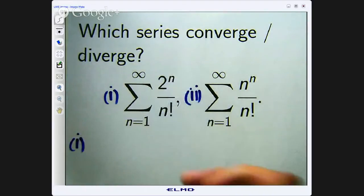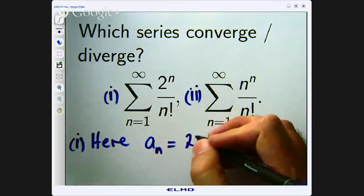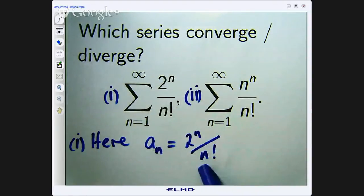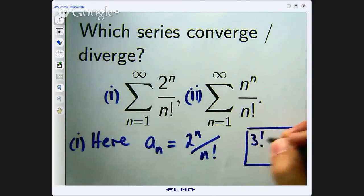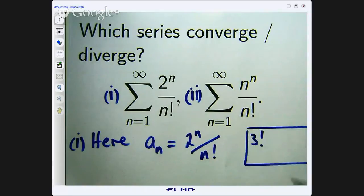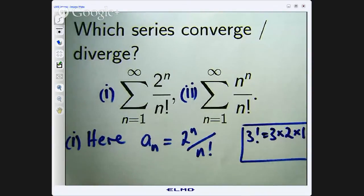All right, so here, the sum a_n is, in this case, 2^n all over n factorial. Now, remember, n factorial, just for a special case, the exclamation mark means factorial. So 3 factorial is just 3 times 2 times 1. So n factorial is a generalization of that. What does this ratio test involve? Well, I'm glad you asked. It involves the ratio of a sub n plus 1 over a sub n, and you take the limit as n goes to infinity.